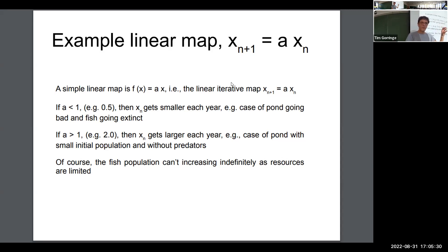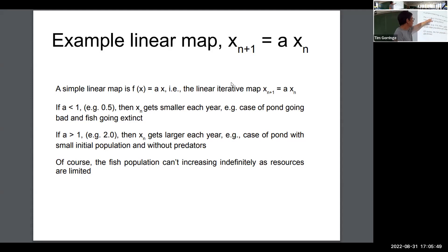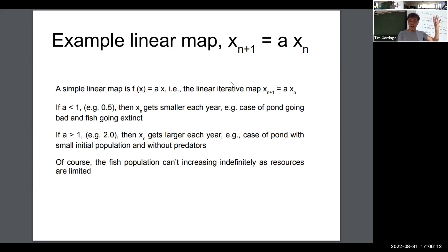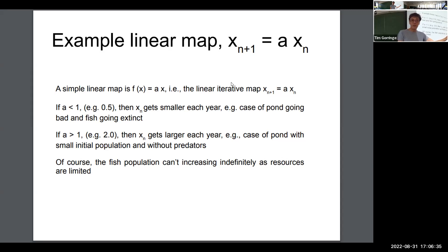Here's a biological example. Think of some fish in a pond. They go through yearly cycles of laying eggs, new fish being born, and old fish dying. We can try to describe that with this iterative map. If the parameter a is less than one — say, a half — then each generation the population halves. After many generations, the fish in that pond will be extinct.